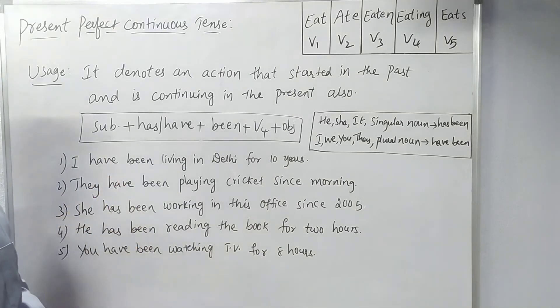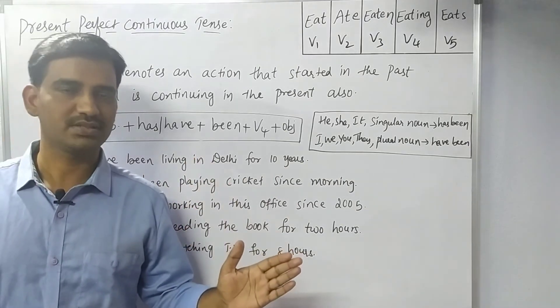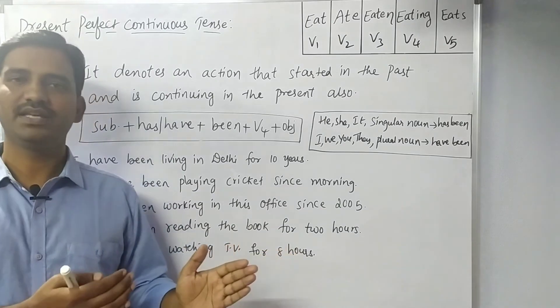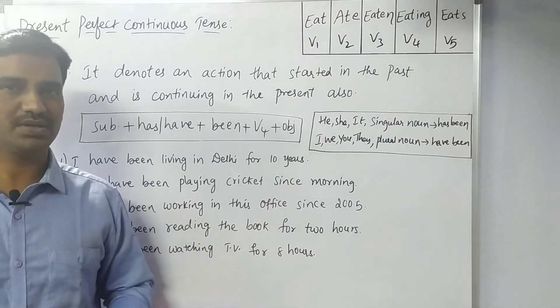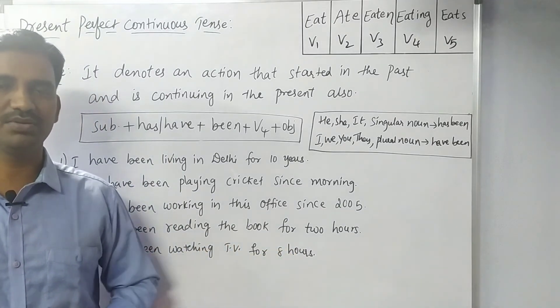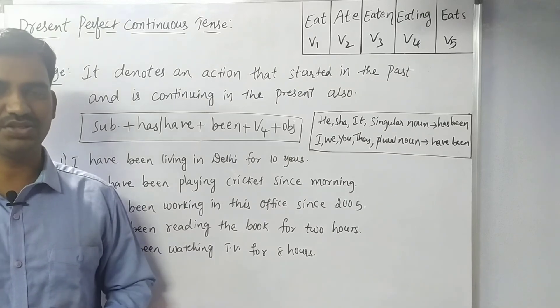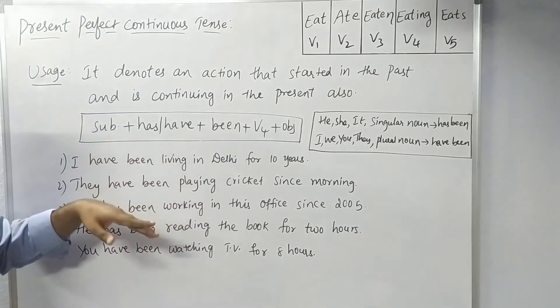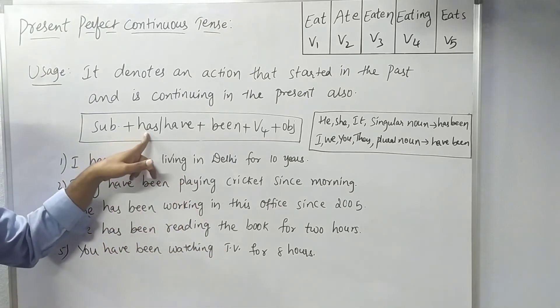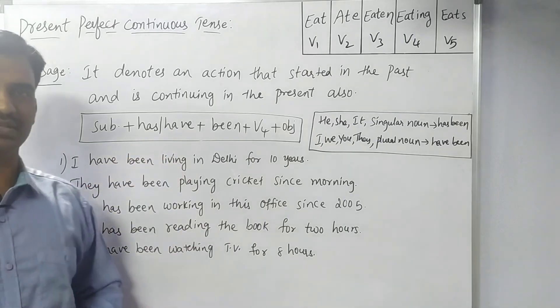Present Perfect Continuous Tense structure: use 'has' with singular subjects and 'have' with plural subjects, followed by 'been' and the V-ing form of the verb.